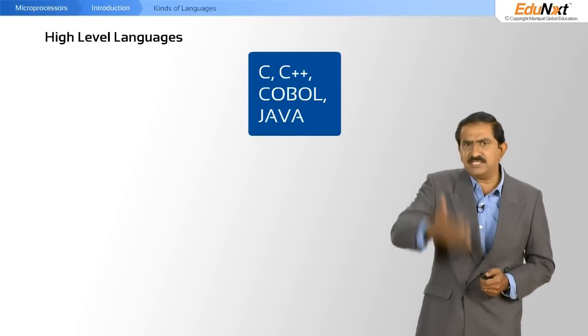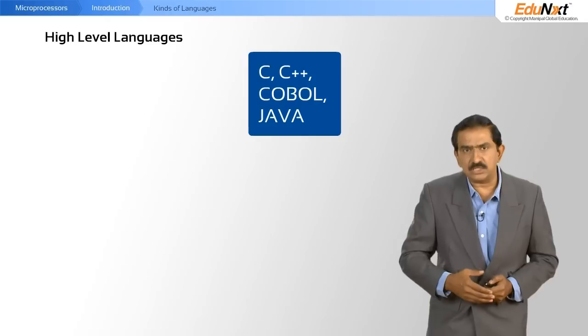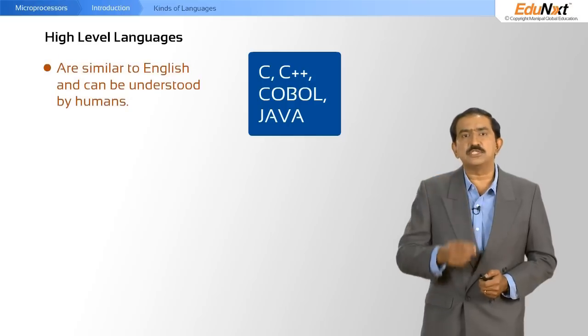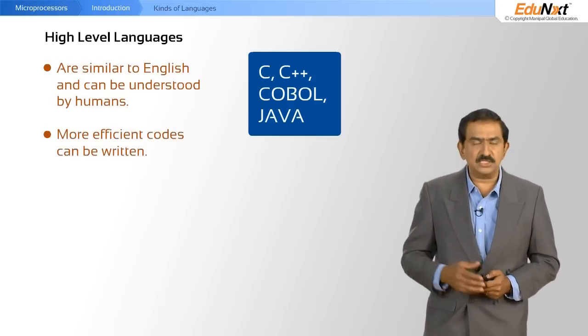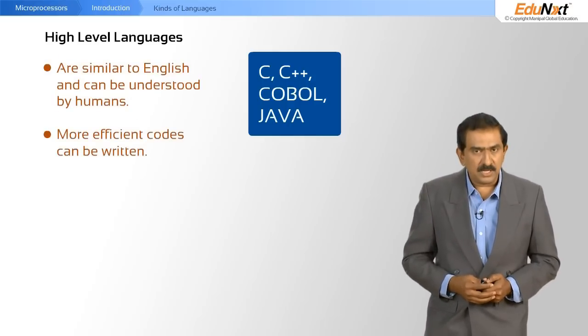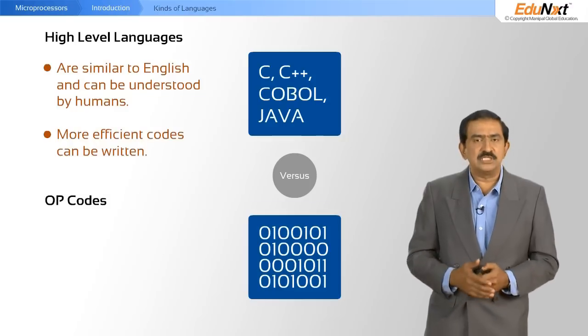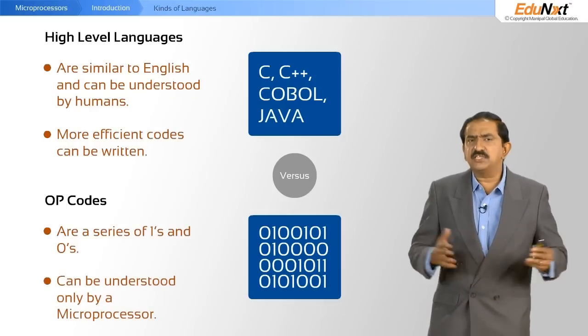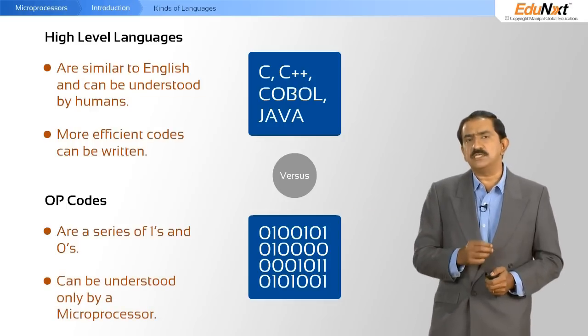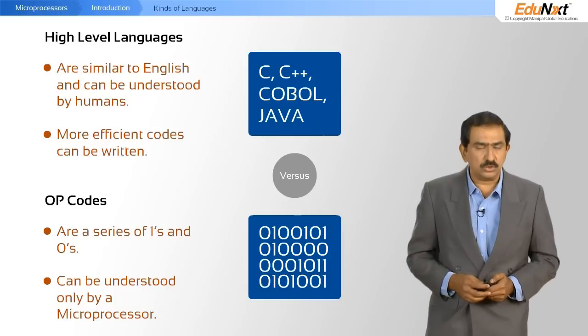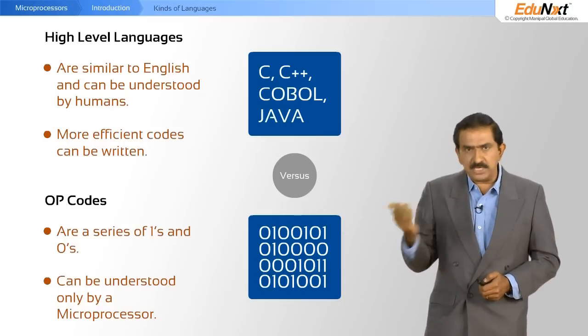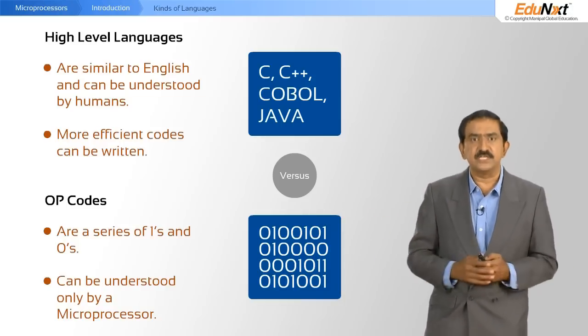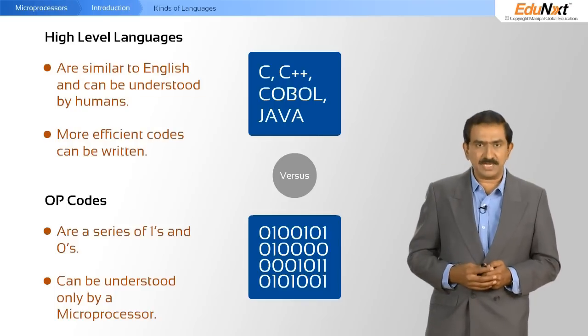So why do you have this gamut of languages, this hierarchy of languages? The reason is that the high-level languages are closer to English and can be understood by the human being. Whereas the opcodes are just a series of ones and zeros. A human being finds it extremely difficult to handle a series, a string of ones and zeros. For a computer, for a microprocessor, it is in its natural state. It loves ones and zeros. And that's why you need this hierarchy of languages.